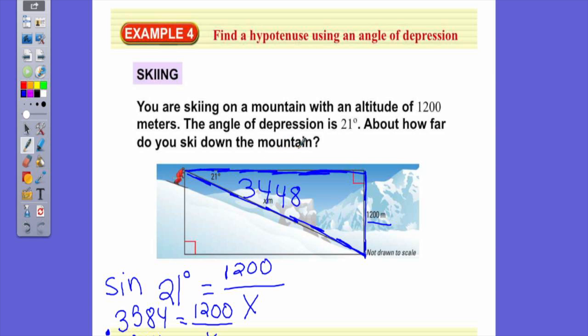So to clear that, I'm going to multiply x by both sides and get 0.3584x equals 1,200. Now I'm going to divide 1,200 divided by 0.3584, and what do I get? 3,348. But basically, we are skiing, or this man is skiing, downhill 3,348 meters. That's what they wanted us to find.